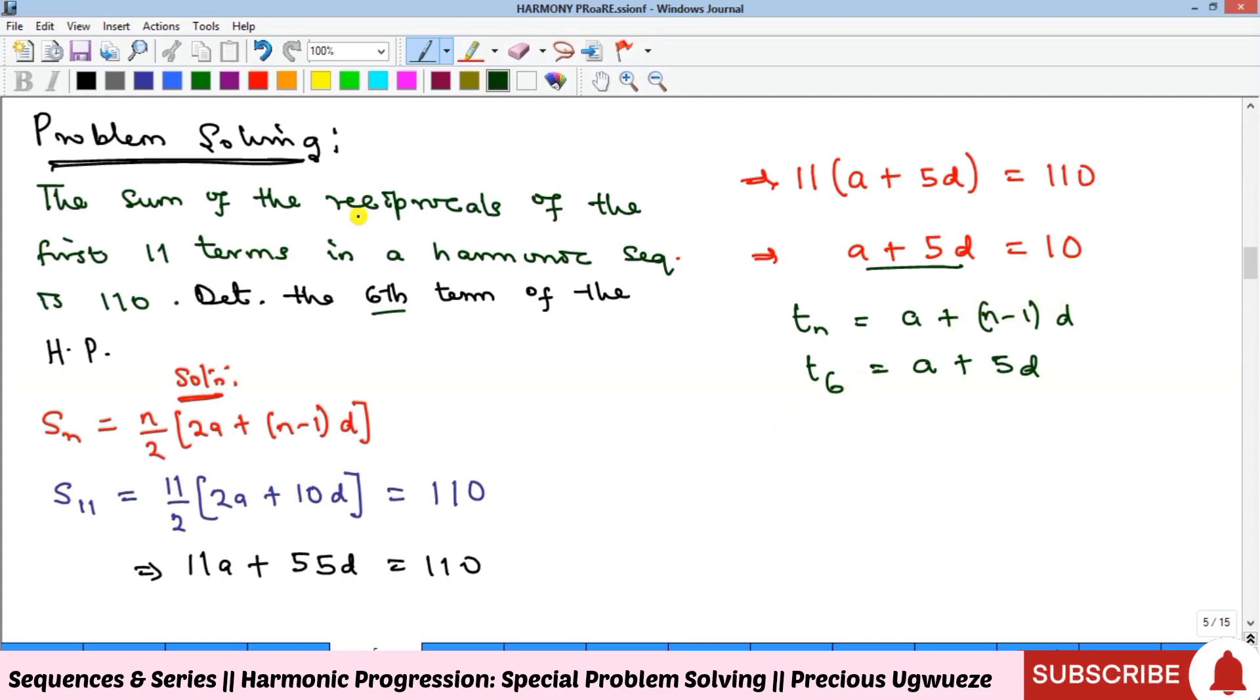To get the sixth term of the HP (which is what they're asking us), all we need to do is take the reciprocal of this sixth term. Recall that we represent the terms of the HP with capital T. Therefore, T₆ = 1/t₆ = 1/10. That's the solution to this problem.